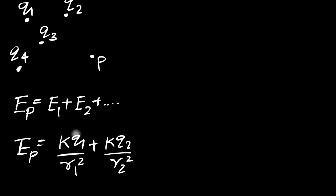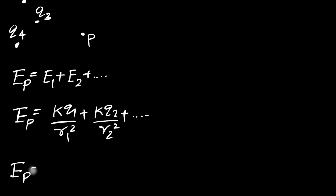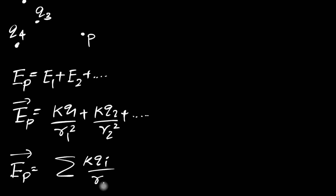We need to take care of vectors — it's a vector summation. The notation requires unit vectors, so in general the electric field is a vector summation of k·qi divided by ri squared, with ri-cap as the unit vector giving direction. That's what we did so far — this is just notation to explain what happens in a discrete charge distribution.